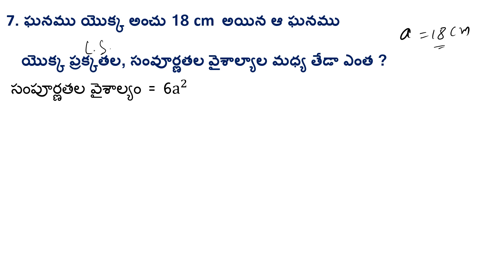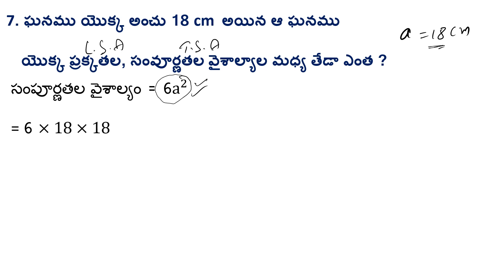Find the lateral surface area (LSA) and total surface area (TSA). TSA formula is 6a². Substituting a = 10 cm: 6 × 10 × 10. Then using a = 18: 6 × 18 × 18 = 1944 square centimeters.